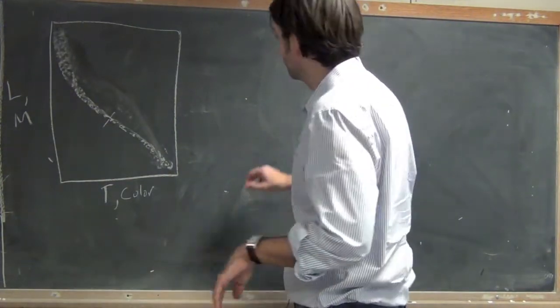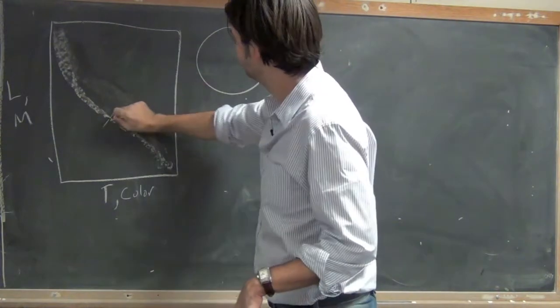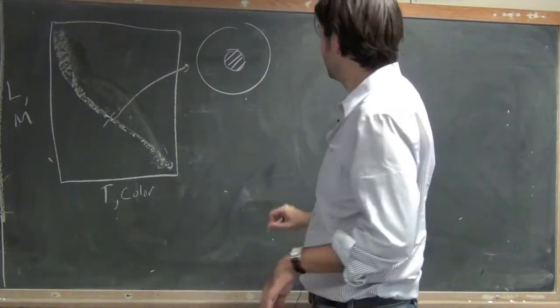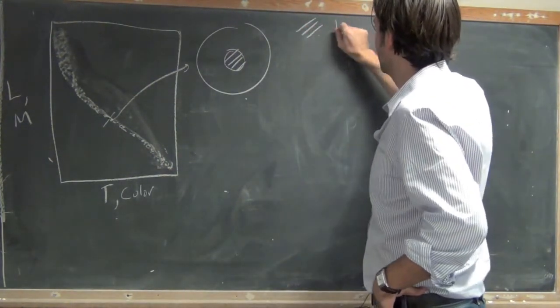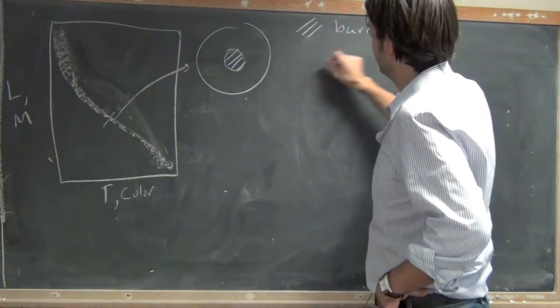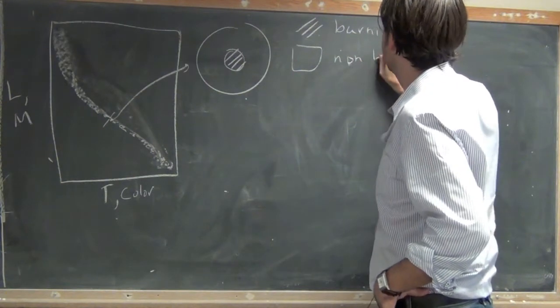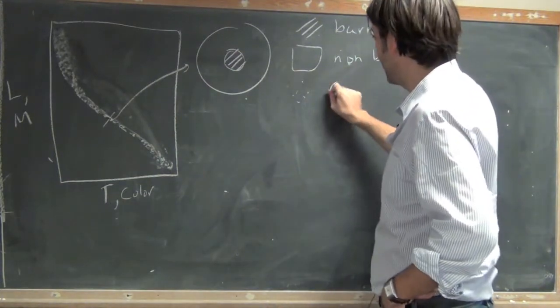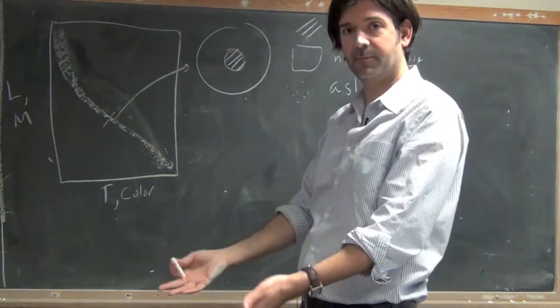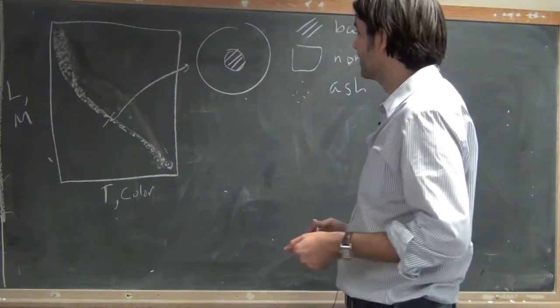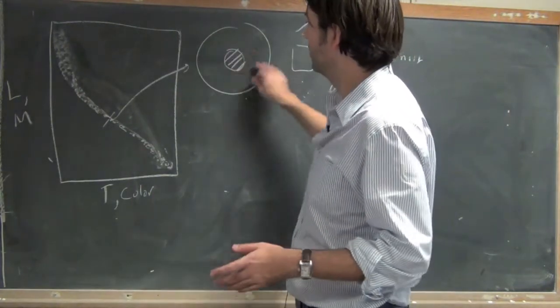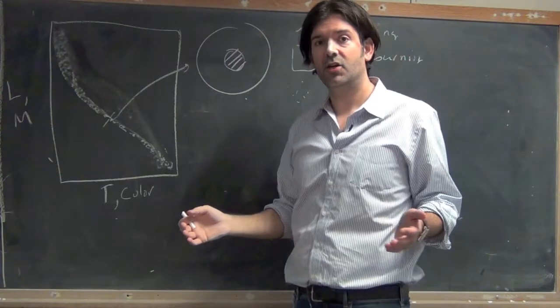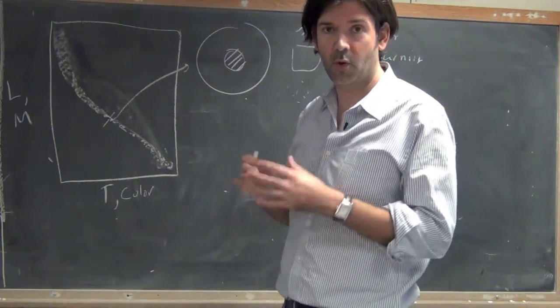So when you're on the main sequence, your star looks essentially like this. Remember, the way I use it in class is that I like to use hatching to indicate burning, blank to indicate non-burning, and dots to indicate ash, material which is the result of previous burning but is currently not burning. In the beginning, you have a non-burning hydrogen region and a burning hydrogen core. This is what essentially defines your period on the main sequence, that you have core hydrogen burning.